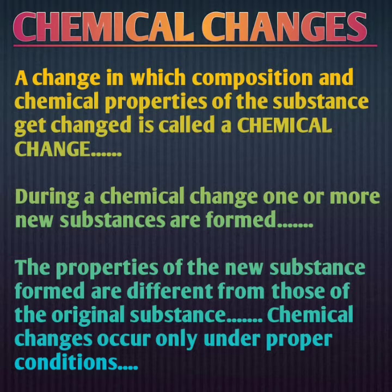One more thing to identify chemical changes: जब भी कोई chemical change होता है, तो उसके लिए proper conditions की requirement होती है. अगर आप paper को burn कर रहे हो, तो paper का temperature normal होना चाहिए, और oxygen का presence must है. अगर paper गीला है तो वो जलेगा नहीं, और अगर oxygen present नहीं है तब भी paper नहीं जलेगा. तो chemical changes always occur under particular proper conditions.